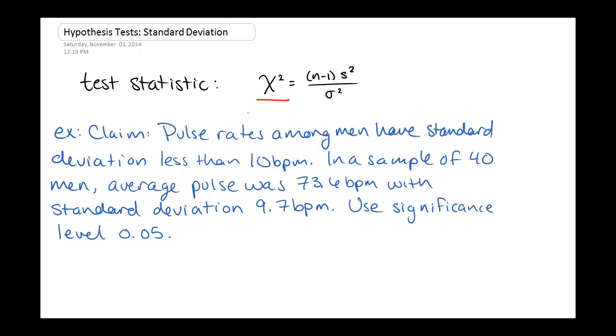So we saw this again back at the confidence intervals as well. For this example here, we've got a claim that the pulse rates among men have standard deviation less than 10 beats per minute. So we want to test this claim that's about a standard deviation of the population.